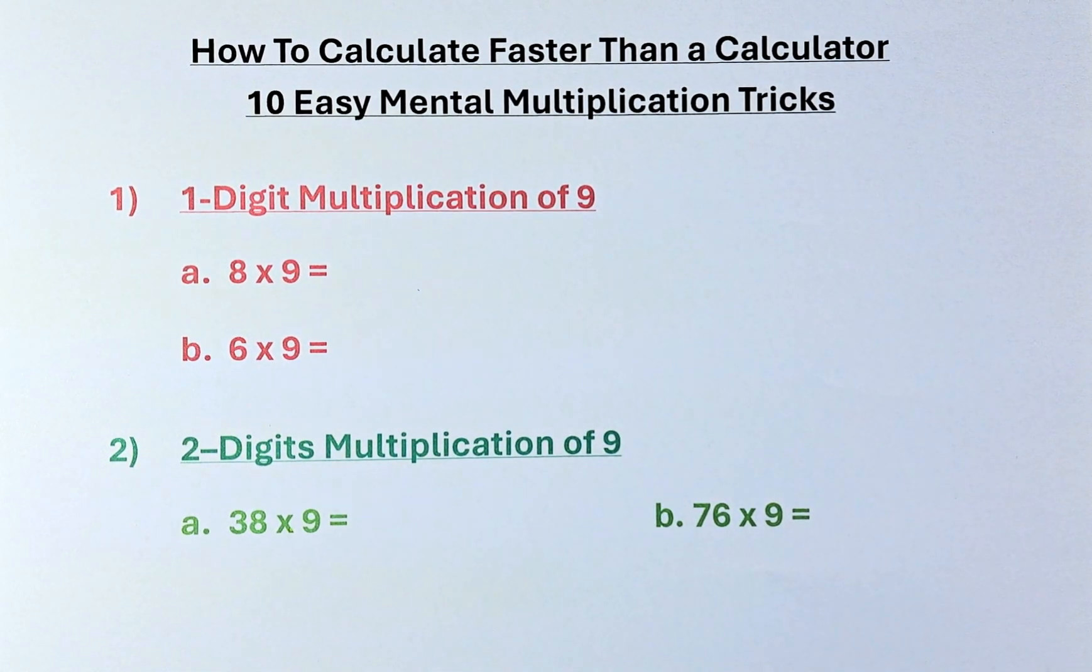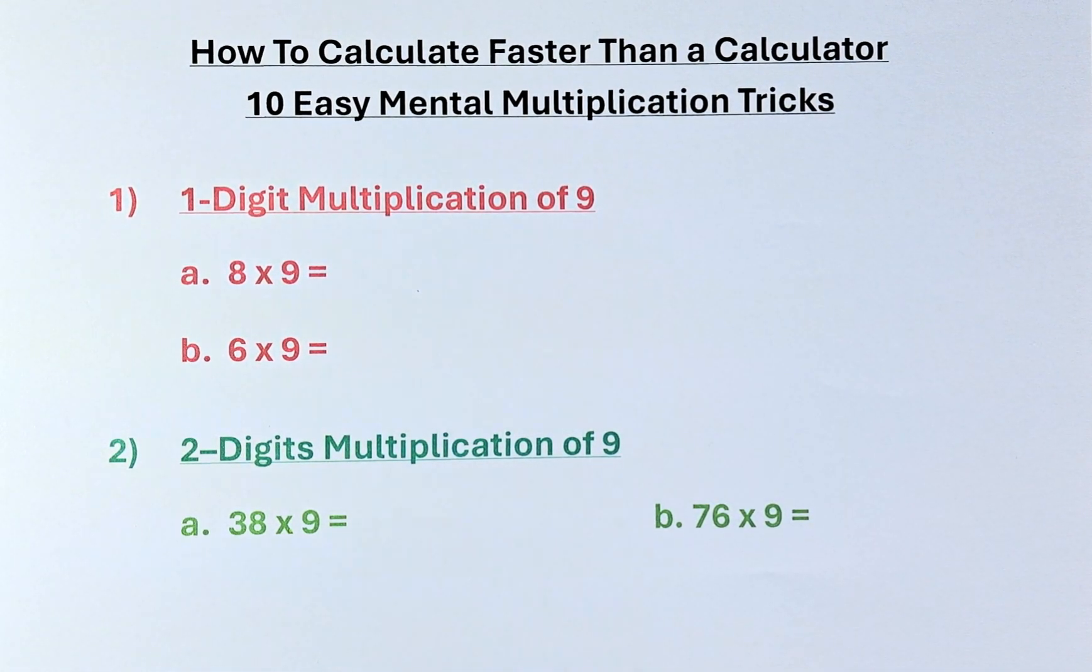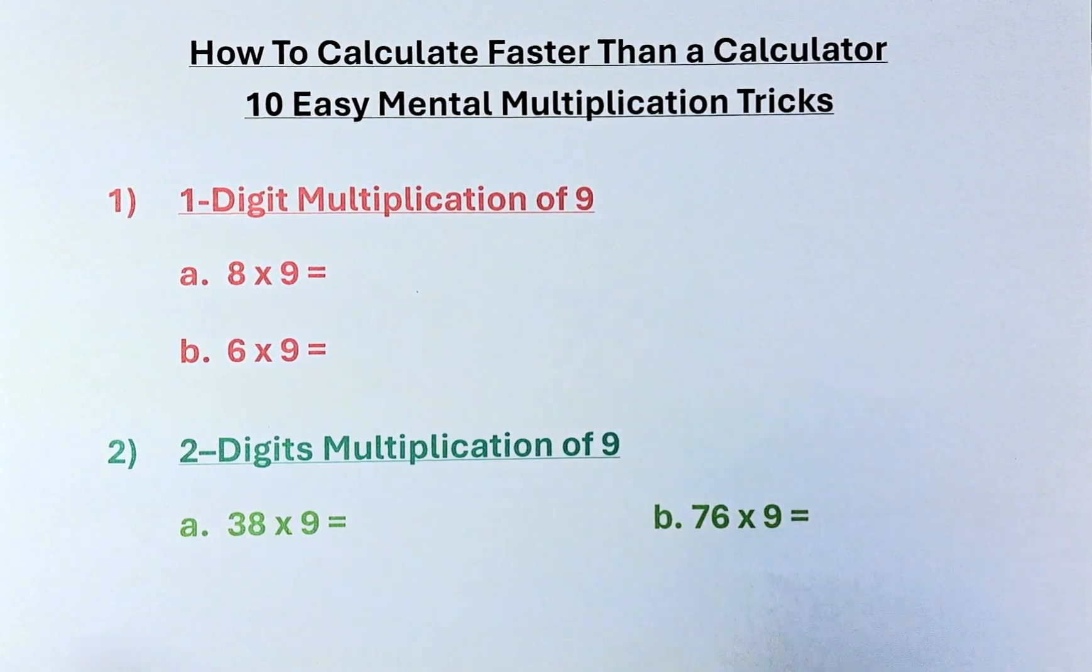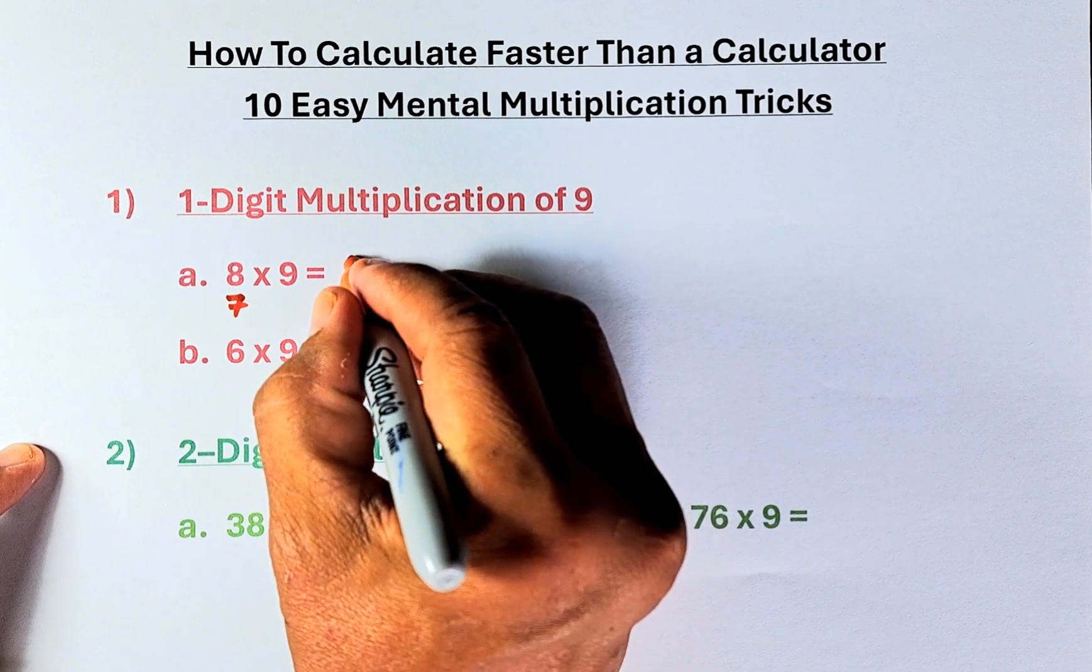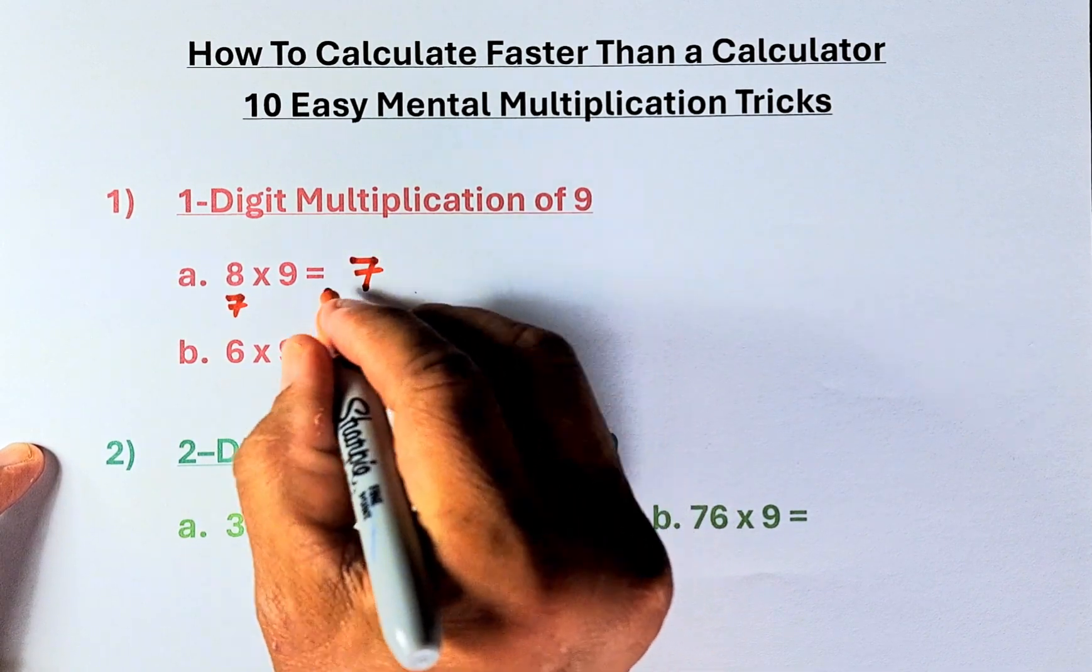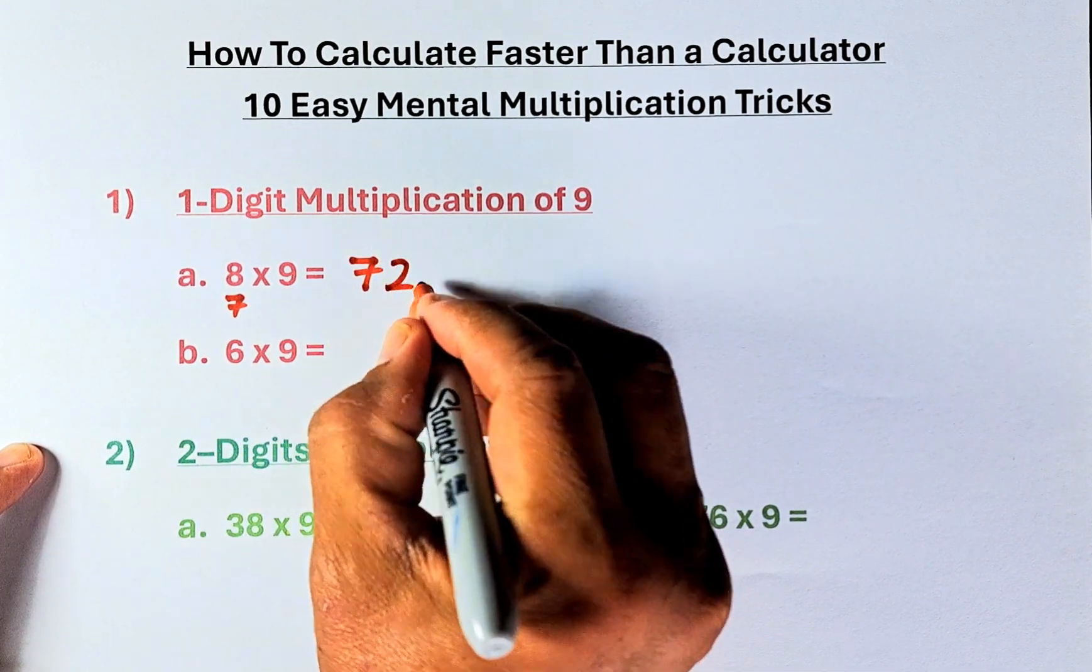1-digit multiplication of 9. So if I say 8 times 9, what you do is you are going to minus 1, so 8 becomes 7. So the first number is going to be 7, and the second number is going to add up to 9, so it becomes 72.